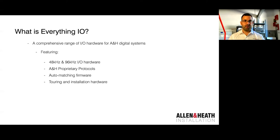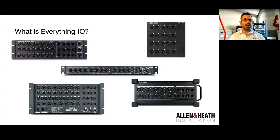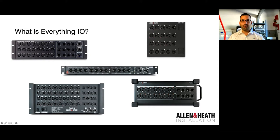There's a whole range. For example, the AR2412 is a 48kHz 24-input 12-output box. The DX012 is a 12 analog output box, analog and AES digital. The DX164W is a wall mount box. The GX4816 is a 48-input 16-output rack mount box. And finally the DX168, a mobile box with rubber feet, but it also has a rack mount kit if you want to rack mount it in a stage rack or server room.